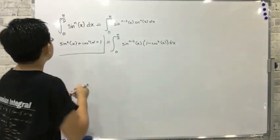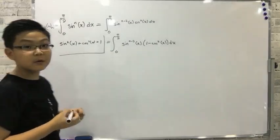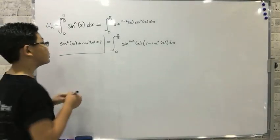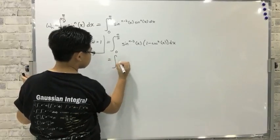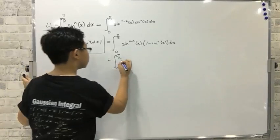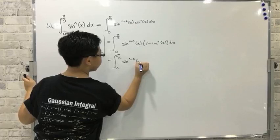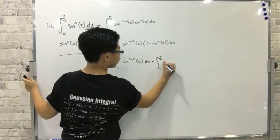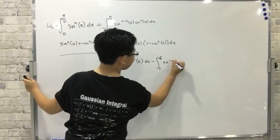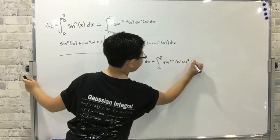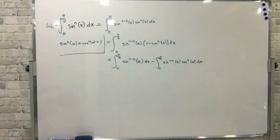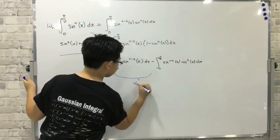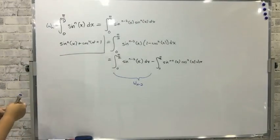Well, here's the reason. Let's call this Wn. We want to define it in terms of itself — not Wn but Wn minus 2. So we're going to expand this integral to the integral from 0 to pi over 2 of sin to the n minus 2 of x dx, minus the integral from 0 to pi over 2 of sin to the n minus 2 of x cos squared of x dx. This is the full expression we need, and the first part is Wn minus 2, as you can see. So we can express this in terms of Wn minus 2.